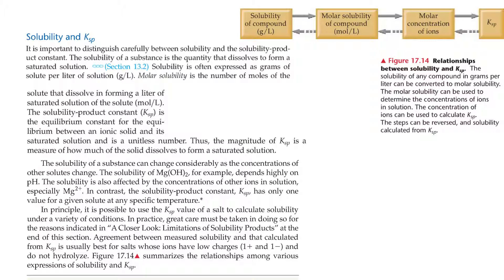Agreement between measured solubility and that calculated from K-sub-sp is usually best for salts whose ions have very low charges and do not hydrolyze. Figure 17.14 summarizes the relationships among various expressions of solubility and K-sub-sp. The solubility of any compound in grams per liter can be converted into molar solubility, which can then be used to determine the concentrations of ions in solution. Those ion concentrations can be used to calculate K-sub-sp, and the steps can be reversed to calculate solubility from K-sub-sp.